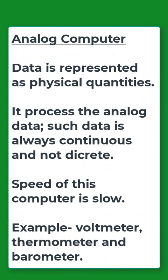The next type of computer on the basis of operation is analog computer. The data is represented as physical quantities, and it processes analog data. Such data is always continuous and not discrete.